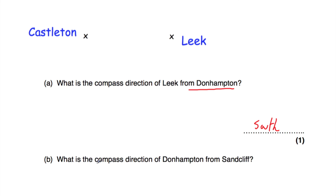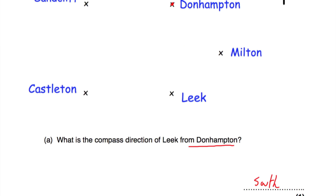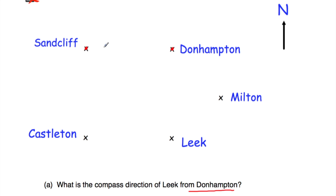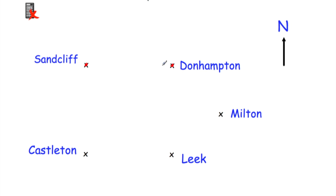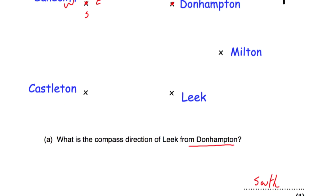Part B says what is the compass direction of Donhampton from Sandcliffe? So from Sandcliffe — let's go to Sandcliffe, so that's here — we want to find the compass direction of Donhampton. We've got north, east, south, and west. We want to go this way to Donhampton, so that will be east.